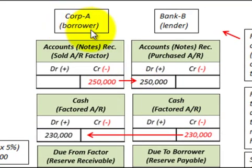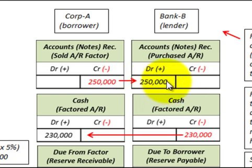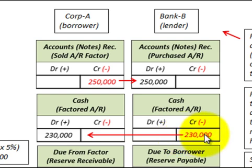Corporation A, the seller, sells $250,000 worth of accounts receivable to Bank B, so they credit their accounts receivable by $250,000. Bank B debits their accounts receivable purchased by $250,000. Bank B then returns $230,000 in cash to Corporation A, so Bank B credits cash by $230,000 and Corporation A debits cash for $230,000. The face value of the receivables is $250,000, but the cash received is only $230,000.